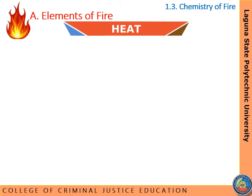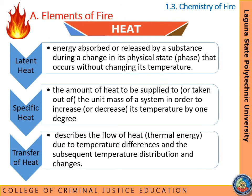To understand the characteristics of heat, we have latent heat, specific heat, and transfer of heat. Latent heat is the energy absorbed or released by a substance during a change in its physical state or phase that occurs without changing its temperature — the key point is that it occurs without changing its temperature. Specific heat is the amount of heat to be supplied to the unit mass of a system in order to increase its temperature by one degree. Transfer of heat describes the flow of heat, or thermal energy, due to temperature differences and the subsequent temperature distribution and changes.